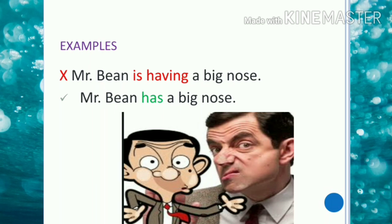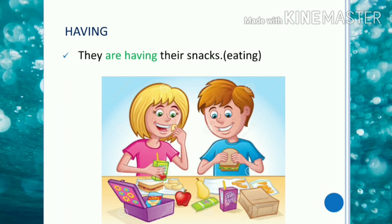'Mr. Bean is having a big nose' is grammatically wrong because 'have,' when used to show possession or appearance, cannot be used in continuous form. So the correct usage is 'Mr. Bean has a big nose.' But 'they are having their snacks' is grammatically correct because here it means that they are eating their snacks.